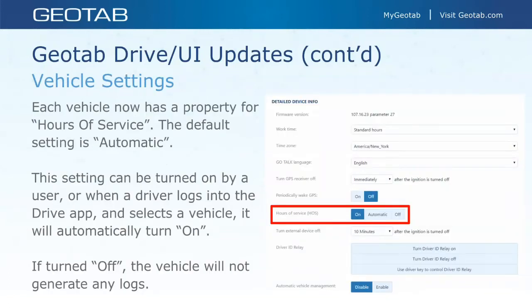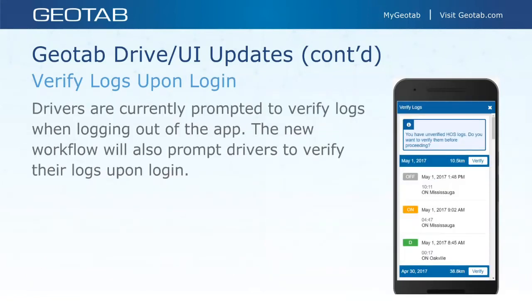Vehicle settings: each vehicle now has a setting under more details for hours of service — on, automatic, and off. By default it's going to be set to automatic. It will stay on automatic until someone logs into the Geotab Drive app and selects that vehicle. Once that happens, the hours of service setting changes from automatic to on and will continue to generate logs for that vehicle. If you have hours of service set to off, it will not generate logs for that vehicle. Once it detects someone selecting the vehicle through Geotab Drive, it changes to on. Drivers are also now prompted to verify any unverified logs when they first log into the app — that is a new change.